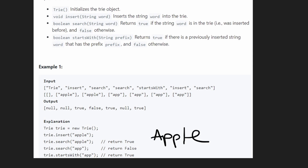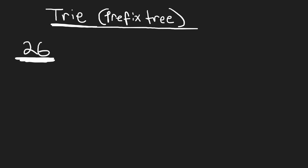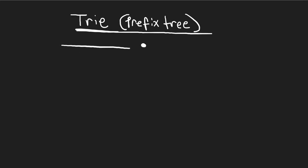Now let me show you what a trie actually is. In this problem, the limitation is that words will only have characters from lowercase a to z, so exactly 26 characters to worry about. This is a tree — a prefix tree, a special kind of tree. Initially, our tree is going to be empty, but let's say we want to insert 'apple'.